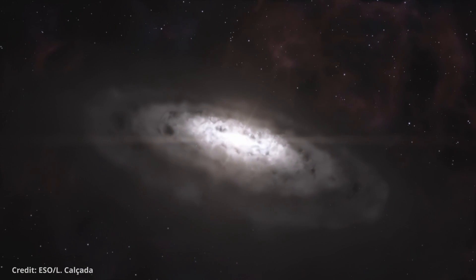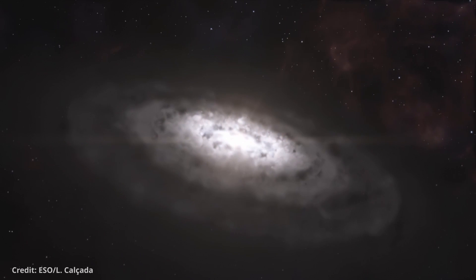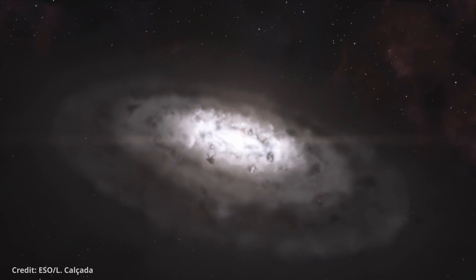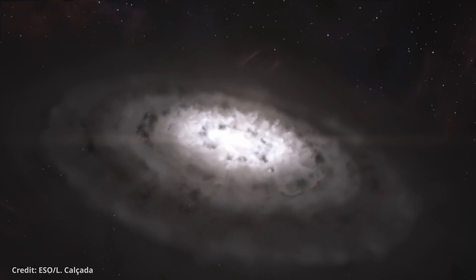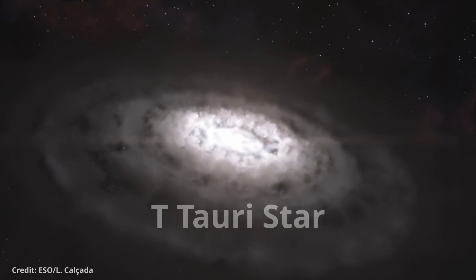For the next 400,000 years, it continues to hoover up the remaining material in its vicinity. Once it's all gone, the Sun is now a pre-main sequence star, better known as a T Tauri star.